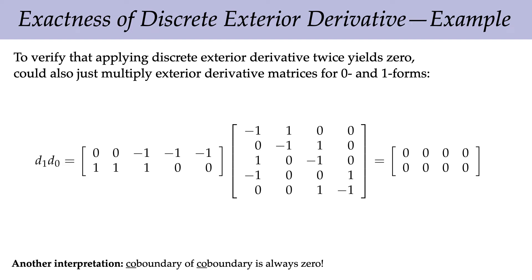Just like the boundary of the boundary is always zero, the co-boundary of the co-boundary is also zero. The important summary is that taking a derivative on a mesh amounts to adding up the values over the boundary of mesh elements in an oriented fashion.